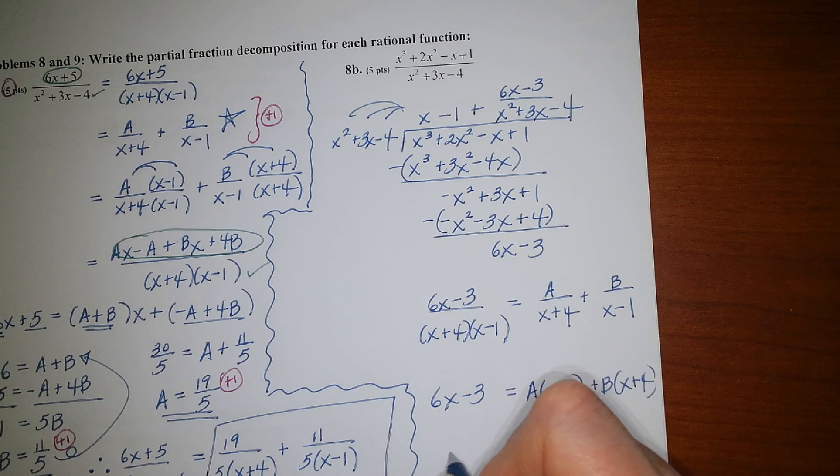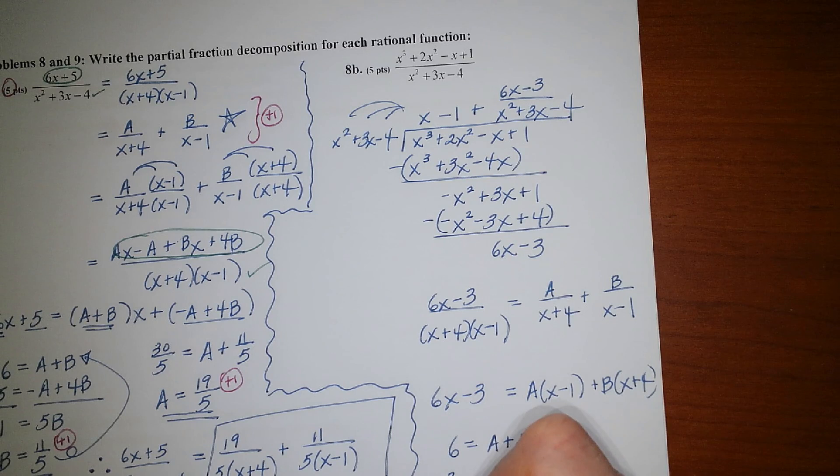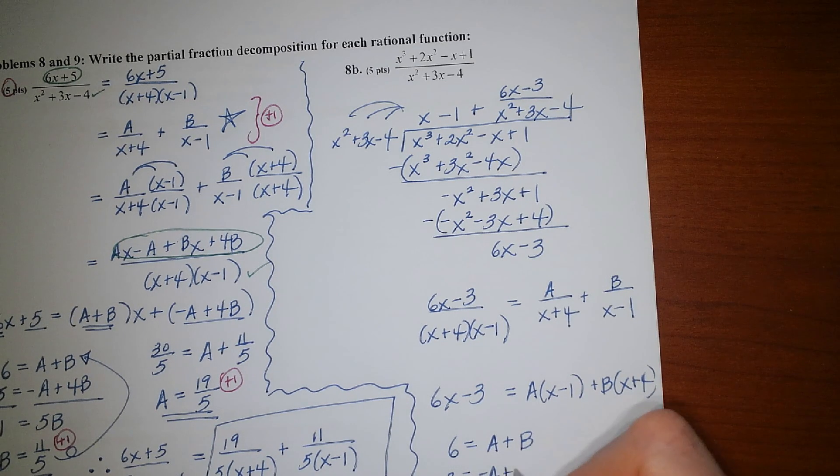you should have a times x minus 1 plus b times x plus 4, all equal to 6x minus 3. And then from there, you'd get 6 would have to equal a plus b, and negative 3 would have to equal the opposite of a plus 4b. All right.